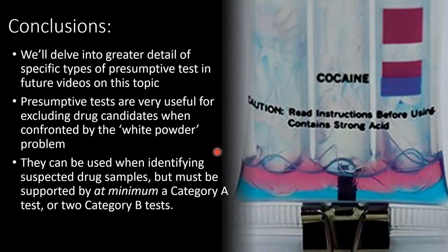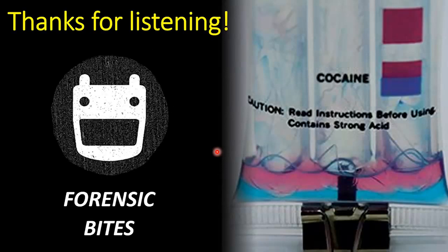To conclude, we're going to delve into greater detail in further videos on the specific kinds of presumptive tests used when analysing illicit drugs. Presumptive tests are very useful for excluding certain drug candidates when confronted by the white powder problem; however, they can't be used to unambiguously identify a suspected illicit drug by themselves. They can factor into an identification, but must be supported by at minimum a Category A test such as mass spectrometry, or two Category B tests like capillary electrophoresis or gas chromatography. That's all we have for today — thanks for listening.